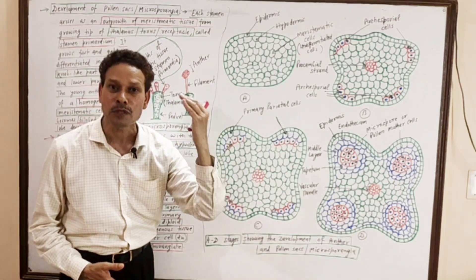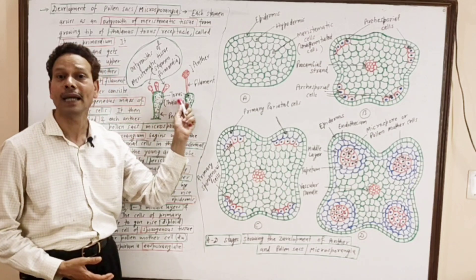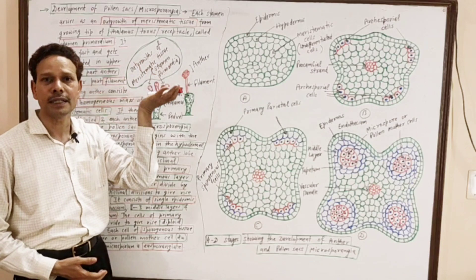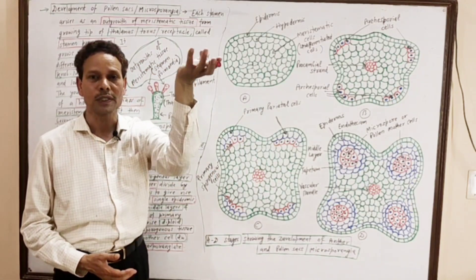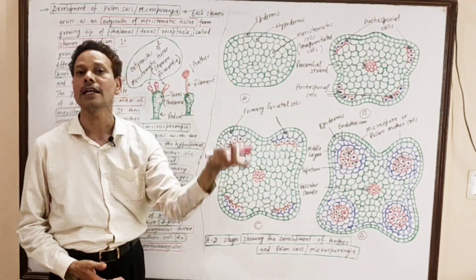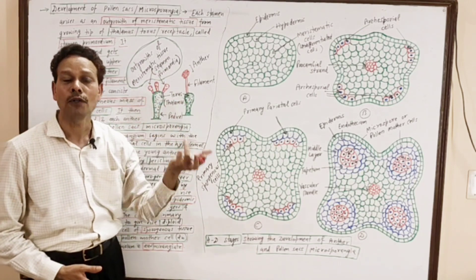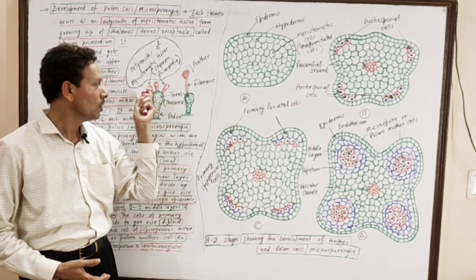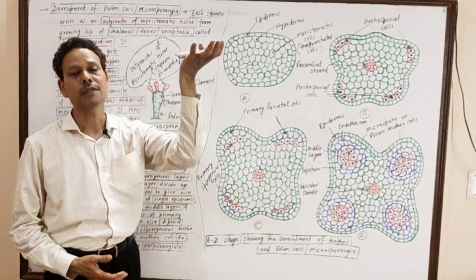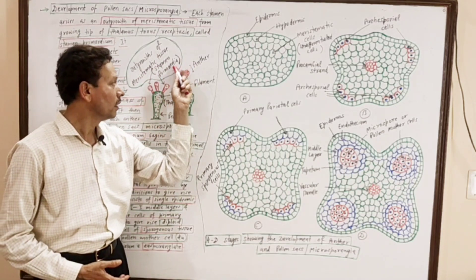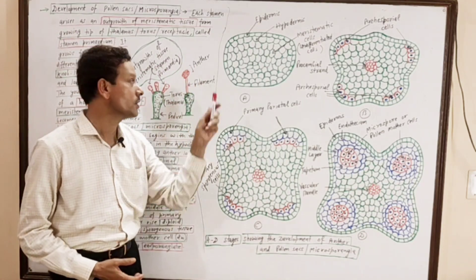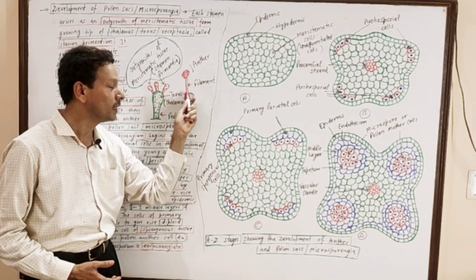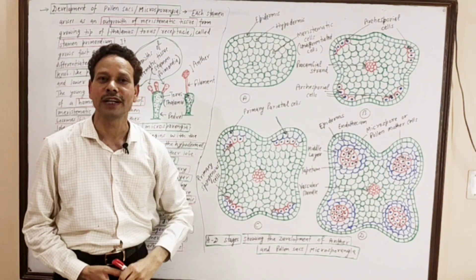Development of stamen begins on this floral axis — it is thalamus, torus, or receptacle. On this axis, small outgrowths consist of meristematic tissue. These small outgrowths of meristematic tissue are stamen primordia. The growth remains fast, and differentiation occurs. This upper region is bilobed; this knob-like structure is the anther, and this small stalk-like structure is the filament.